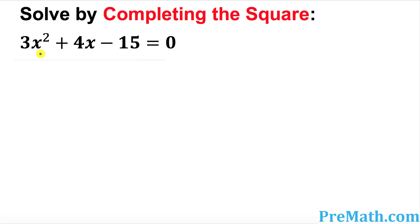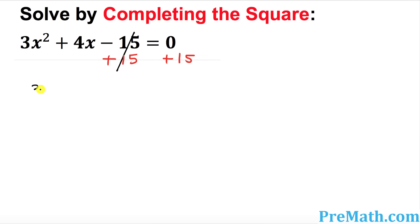The very first thing we need to make sure is that only x variables are on the left hand side. So we must get rid of this negative 15. Once we do that, we get 3x squared plus 4x equal to 15.